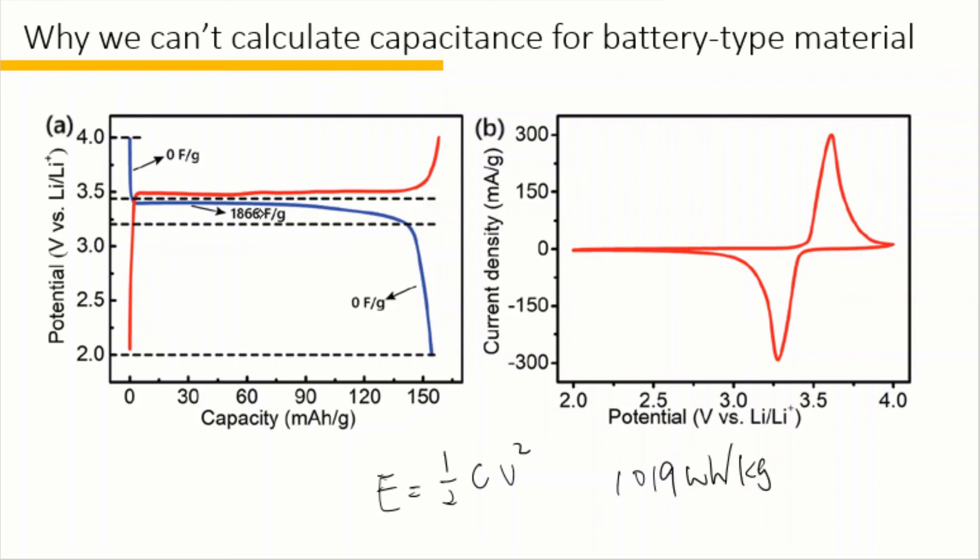But actually, only 0.2 volts have the same capacitance of 1866 farads per gram. So the actual energy density should be 10.33 watt-hour per kilogram. It's about 100 times lower than the value estimated if we calculate everything based on the equation of a supercapacitor instead of battery.